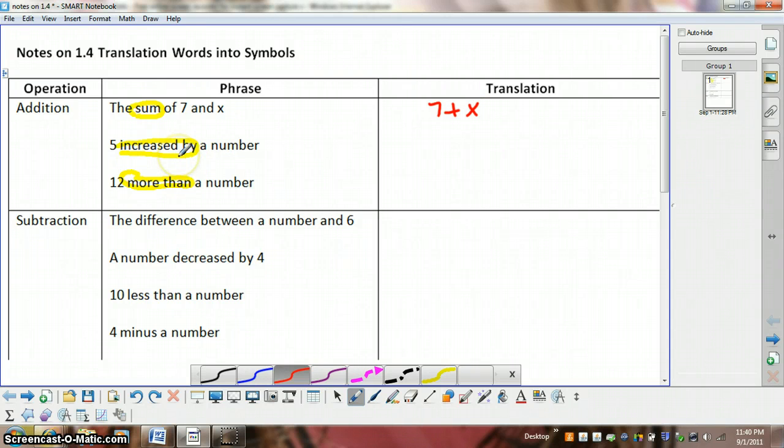5 increased by a number, we would write 5 plus n. I'm going to use n here for the number. And 12 more than a number means 12 is added to the number, so n plus 12. Now, technically speaking, we know that n plus 12 is the same as 12 plus n, since addition is commutative. But 12 is being added to the number. It's 12 more than the number.